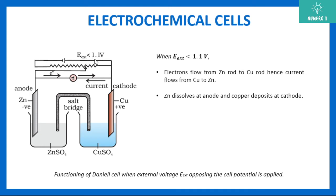When the external potential is less than 1.1 volts, the current goes from copper to zinc, and electrons flow from zinc to copper. Zinc gets dissolved at the anode and copper gets deposited at the cathode — the cathode gets thicker and thicker, while the zinc electrode gets thinner and thinner as zinc goes into the aqueous solution losing its electrons.